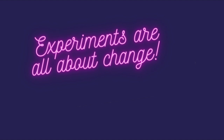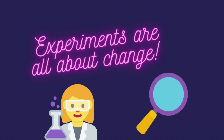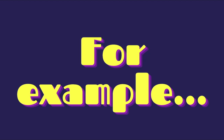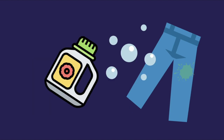When you get down to it, experiments are all about change — the changes that the person doing the experiment makes, and the changes they will watch for. For example, if you were doing an experiment to see how different brands of laundry detergent perform at getting out grass stains, you would try multiple types of laundry detergent. In other words, you would change the type of laundry detergent you were testing, and you would watch for changes in the amount of grass stains in the fabric. In science, each of these variables has a name.